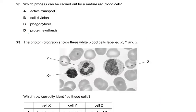Question 28. Which process can be carried out by a mature red blood cell? Active transport — yes, that's the answer. But why not cell division? It doesn't have a nucleus. Phagocytosis? Red blood cells cannot do phagocytosis. Protein synthesis? It doesn't have a nucleus and does not have ribosomes.